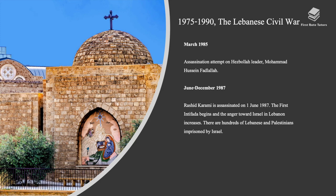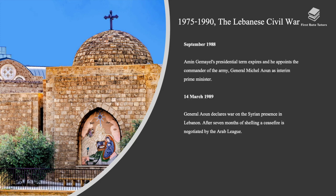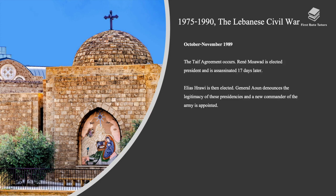Between June and December 1987, Rashid Karami was assassinated on June 1st, 1987. The first intifada began and anger toward Israel within Lebanon increased. There were hundreds of Lebanese and Palestinians imprisoned by Israel. In September 1988, Amin Gemayel's presidential term expired and he appointed the commander of the army. In March 1989, General Aoun declared war on the Syrian presence in Lebanon. After seven months of shelling, a ceasefire was negotiated by the Arab League. Between October and November 1989, the Taif Agreement was reached. René Mouawad was elected president and assassinated 17 days later. Elias Hrawi was then elected. General Aoun denounced the legitimacy of these presidencies and a new commander of the army was appointed.